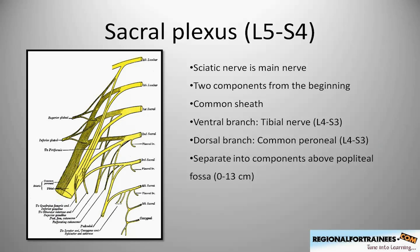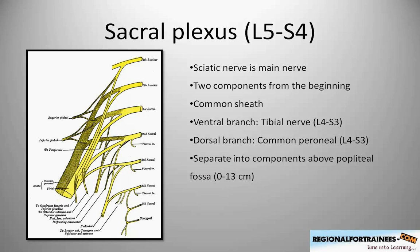Anatomical dissections have shown that these two nerves are pretty much separate from the very beginning but enclosed within the same common sheath. They subsequently separate into their individual components above the popliteal fossa at a variable distance of 0 to 13 cm from the popliteal crease.